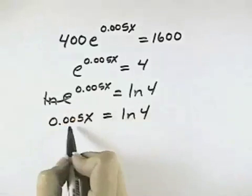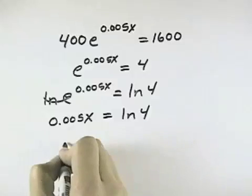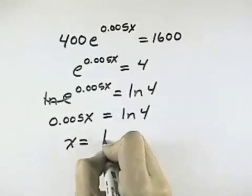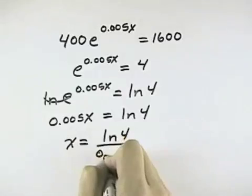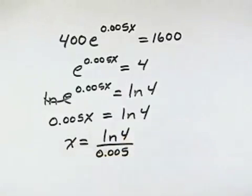So now I have a simple product on the left. To get x by itself, I just divide both sides by 0.005, so the solution is x equals the natural log of 4 over 0.005.